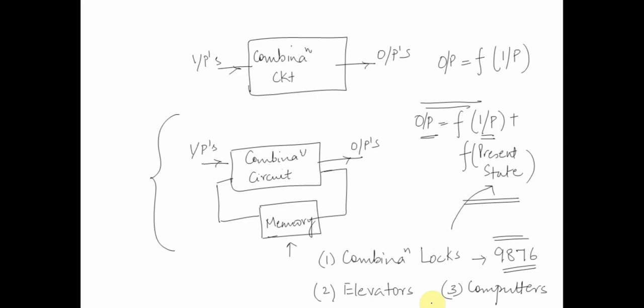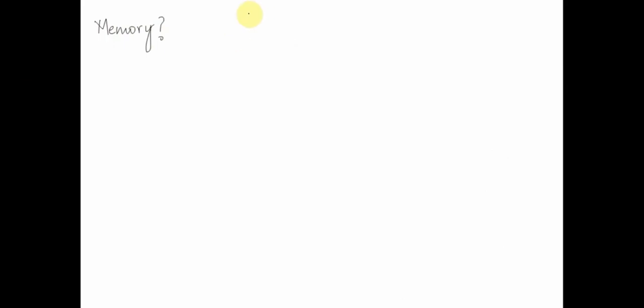Depending upon the memory components or what is the content of the memory, the same set of inputs can generate different sets of outputs. We saw examples of sequential circuits: combination locks, elevators, and computer systems. Now, for a circuit to be called a memory, it should support at least three operations: it should be able to hold a value, read a value that is saved, and change that value.